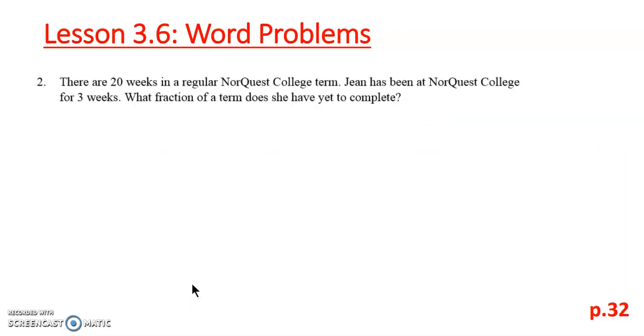For number two, there's 20 weeks in a regular NorQuest College term. Jean has been at NorQuest College for three weeks. What fraction of a term does she have yet to complete? So for this word problem, they're only asking us one question. So what we see is we have a total of 20 weeks and she's been here for three weeks. So what does she have yet to complete? Meaning what has she not done?